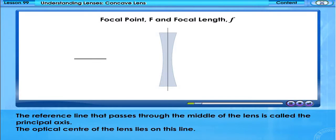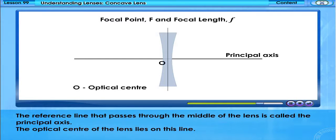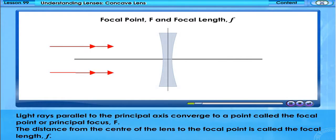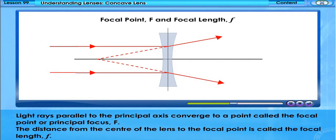The reference line that passes through the middle of the lens is called the principal axis. The optical centre of the lens lies on this line. Light rays parallel to the principal axis converge to a point called the focal point or principal focus. The distance from the centre of the lens to the focal point is called the focal length, f.